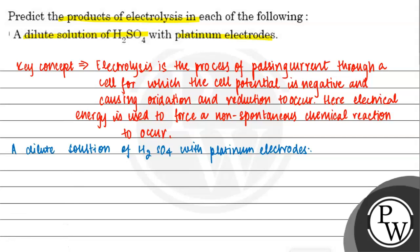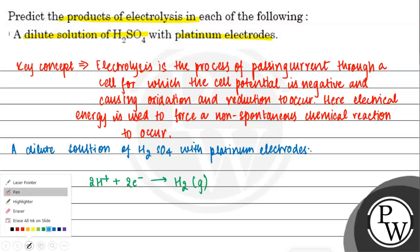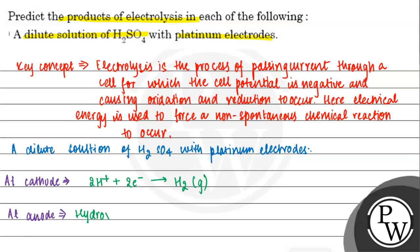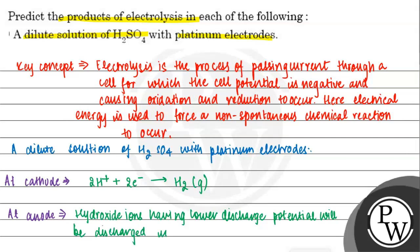Let's first see what happens at the cathode. Hydroxide ions, having lower discharge potential, will be discharged in preference to sulphate ions.